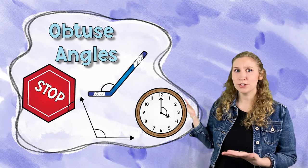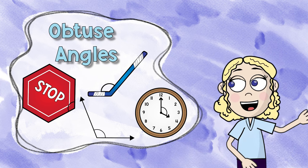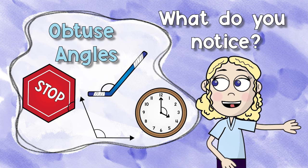What about the next type? Now we have an obtuse angle. Here are a few examples of obtuse angles. Let's try it again. What's similar? What do you notice?